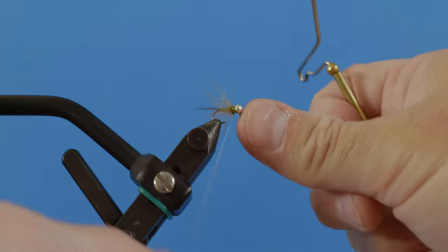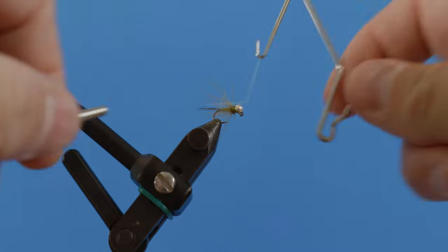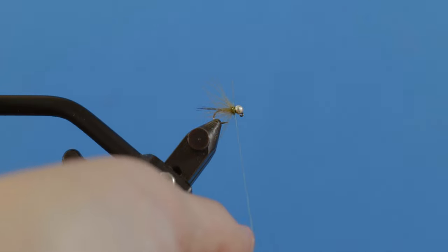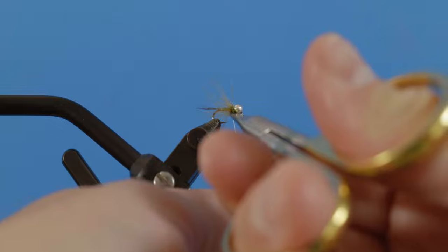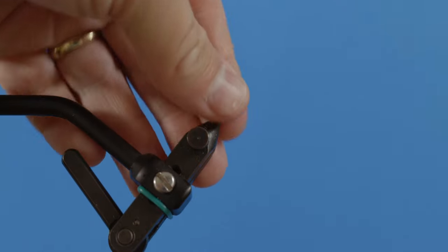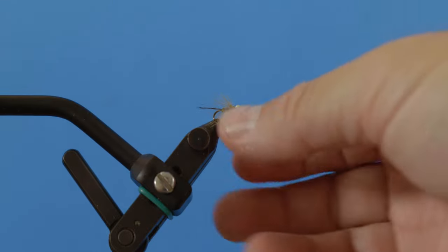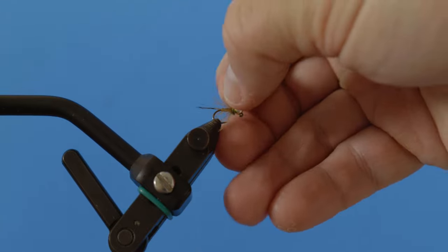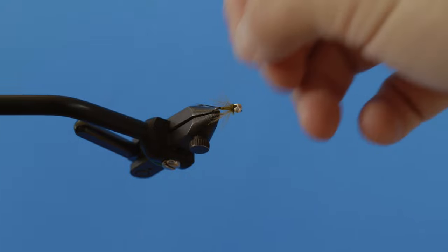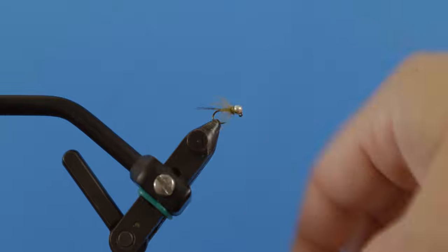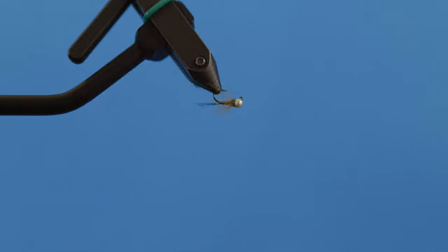Now we just whip finish this guy a couple times, really make sure it's cinched down. Trim off our extra thread here. Grab all these CDC fibers, pull them up, pinch them off so they're the same length. Sometimes I'll come in here and pinch off some of the extra fibers if I think I have a little bit too much. But that's it.